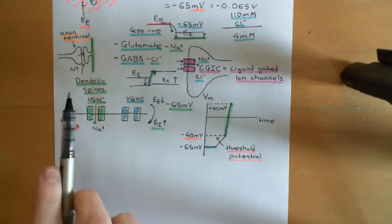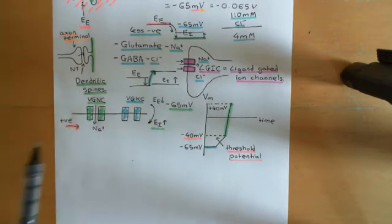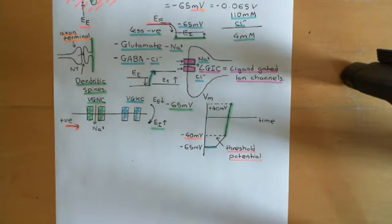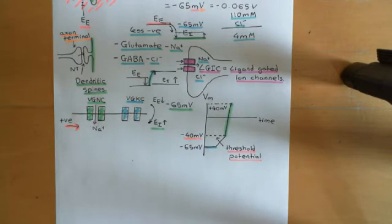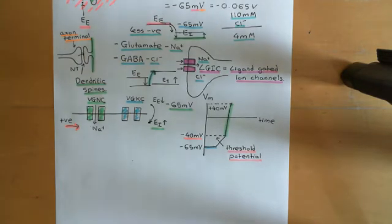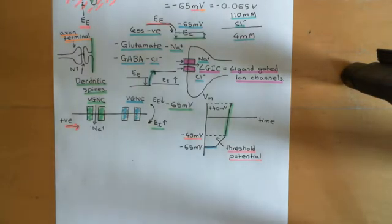The voltage-gated sodium channels have now inactivated — they're no longer conductive. So there's no more sodium current coming into the cytoplasm of the cell. Then, at about the time when the voltage-gated sodium channels have just finished their job and inactivated, the voltage-gated potassium channels just about get around to actually opening.